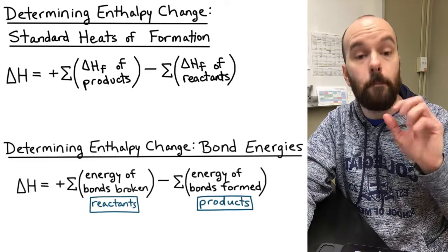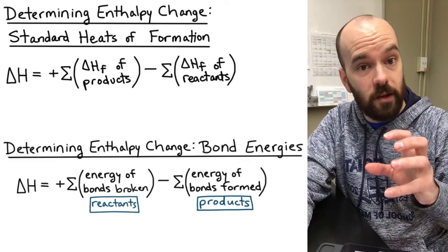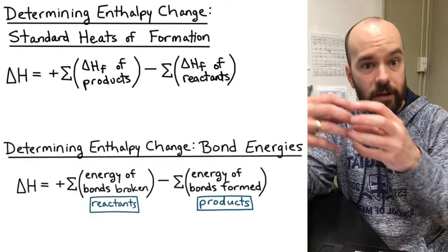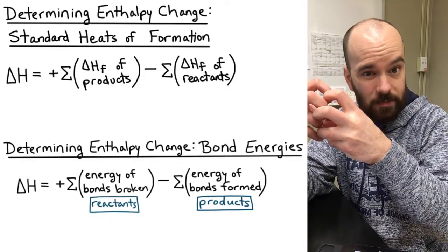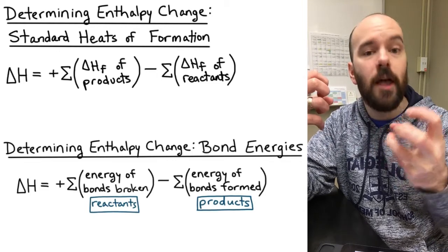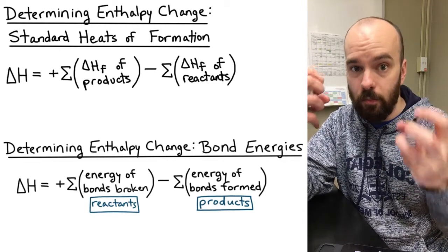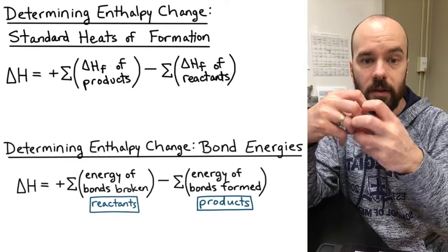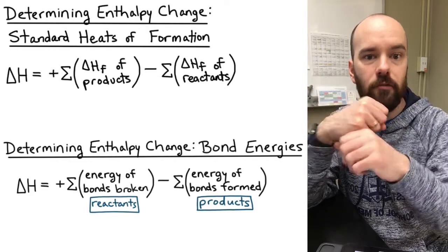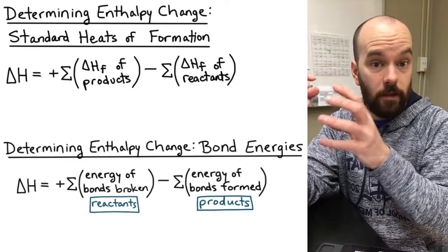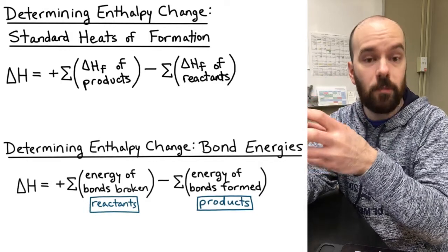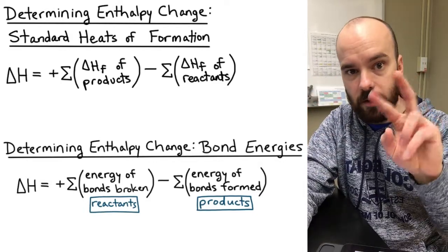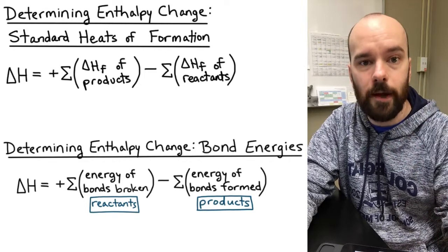Here's how to keep them straight: for bond energies, it takes energy to break a bond, so reactant bond energies are positive; energy is released when bonds form, so product bond energies are negative — giving reactants minus products. For heats of formation, products are what's being formed so they keep their sign, while reactants are being broken down so their sign is flipped.